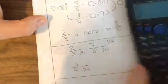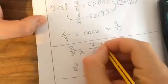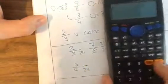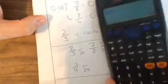8 times 3 is 24, so I'm going to do 7 times 3, which is 21. 3 times 8 is 24, so I'm going to do 2 times 8, which is 16.